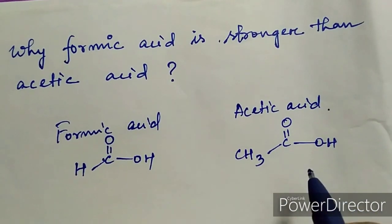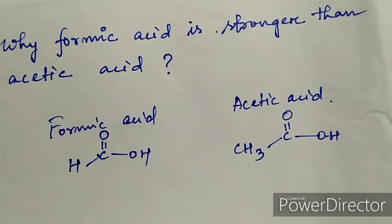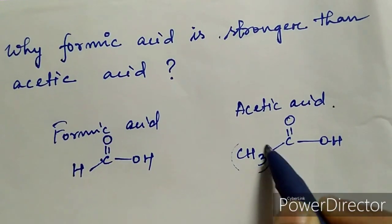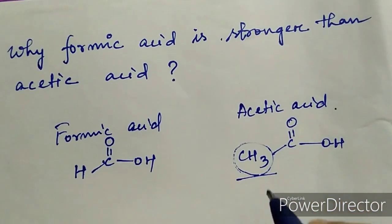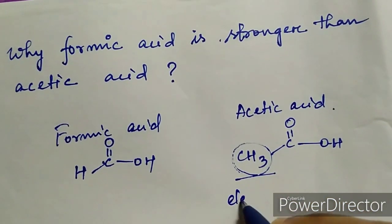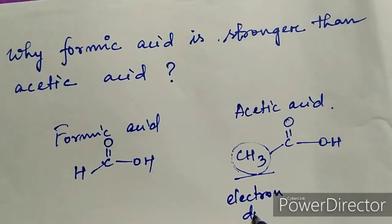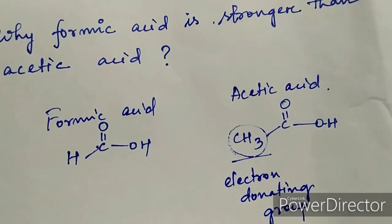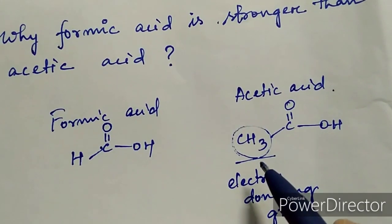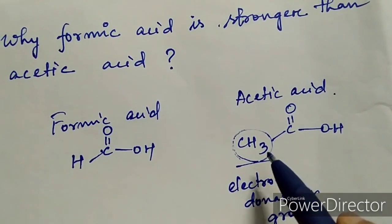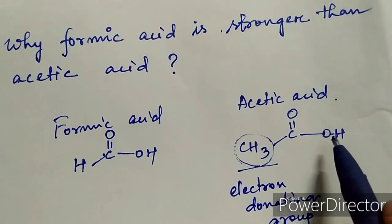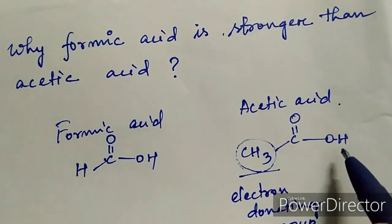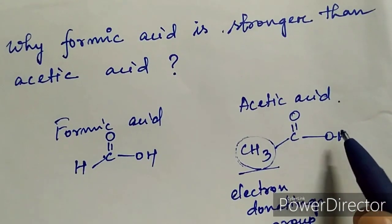To understand why, just look at the structure. In acetic acid, there is a CH3 group, which is an electron-donating group. This CH3 group contributes electron density towards the O-H bond.